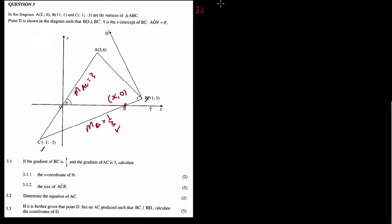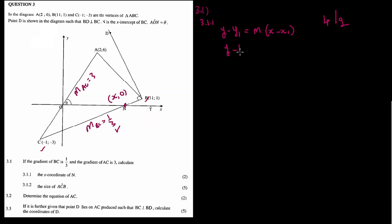Approaching 3.1: I need the equation for the straight line. The formula is y minus y1 = m(x minus x1). I know the gradient and I can use point B. So y minus 1 = (1/3)(x minus 11), which gives y minus 1 = (1/3)x minus 11/3.